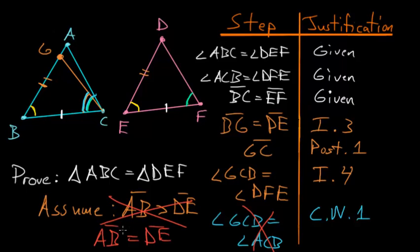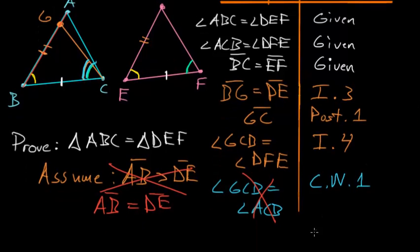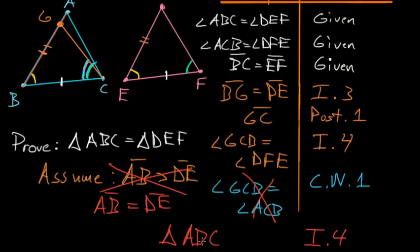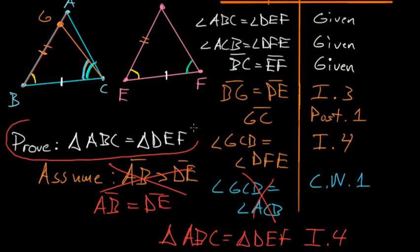This leads us to conclude that AB equals DE. With AB equal to DE, BC equal to EF, and the angle between those equal sides equal, we can apply Book 1, Proposition 4 — the Side-Angle-Side theorem — one more time to show that triangle ABC equals triangle DEF, which is exactly what we were trying to prove. QED.